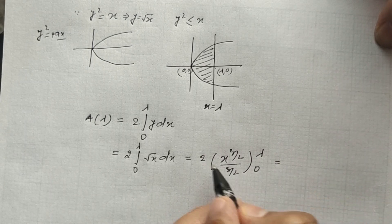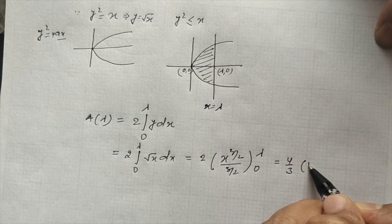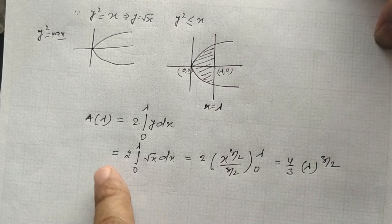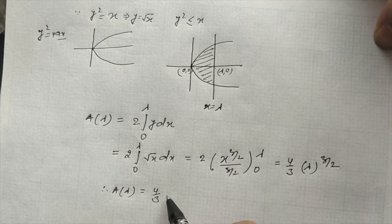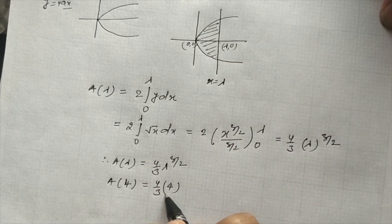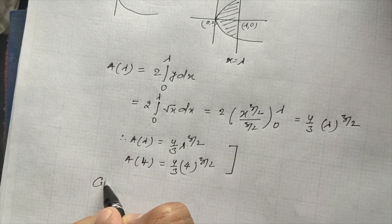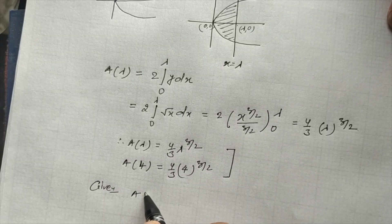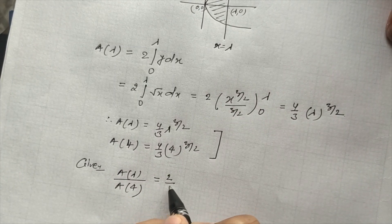This simplifies to (4/3) × λ^(3/2) for A(λ). Similarly, A(4) = (4/3) × 4^(3/2). Setting up the ratio A(λ) divided by A(4) equals 2 by 5 gives us the equation to solve.